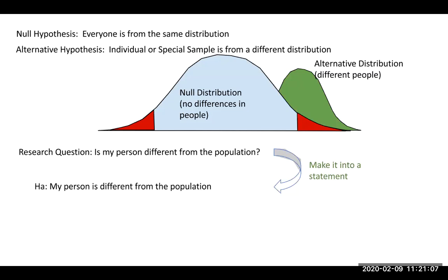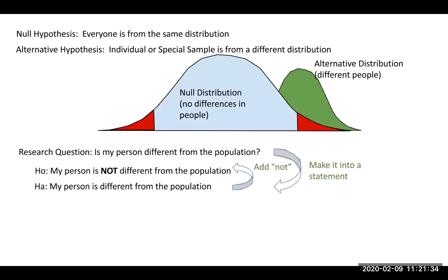Now I have to figure out how to make the null hypothesis. The null hypothesis is that this person is from the blue distribution, or is from the population. So what can I do to the sentence 'my person is different from the population' to make it the opposite? I could just add the word 'not.' So the null hypothesis is: my person is not different from the population. If you have the research question worded perfectly, put it into a statement and that fits perfectly for the alternative hypothesis. Then add 'not,' and it works for the null. The person is not different from the population — they're from the blue distribution. Or the person is different from the population, meaning they're probably from the green distribution.